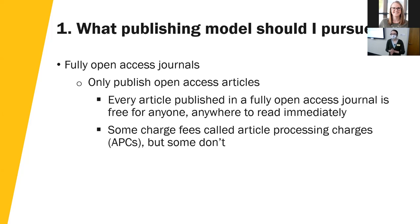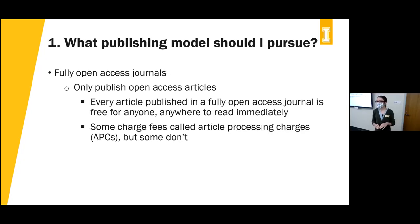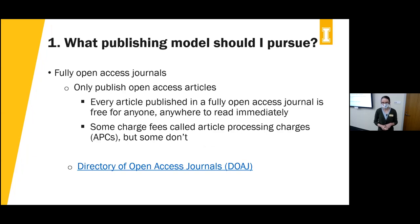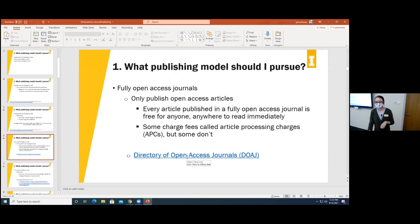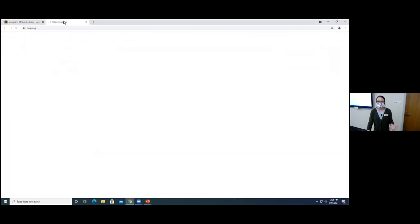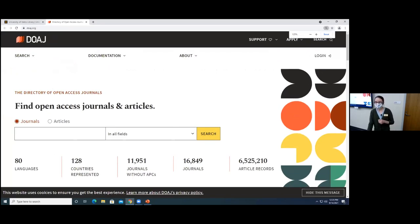On the flip side, we have fully open access journals — journals that only publish open access articles. Every single article published in one of these journals is free for anyone anywhere to read immediately and in perpetuity. Some of these journals charge fees called article processing charges to publish the article, but some don't. These charges are often covered by the individual author, via grant funding, or institutional funding. A list of vetted, peer-reviewed open access journals is available in the Directory of Open Access Journals, which is a good place to go if you want to publish in one.